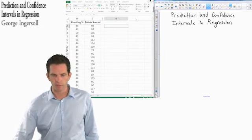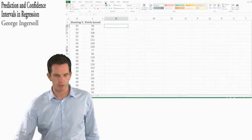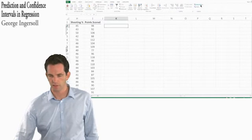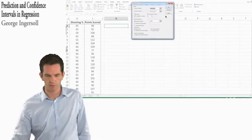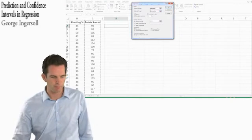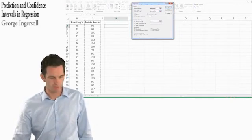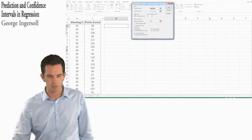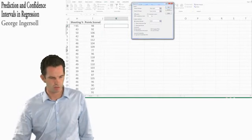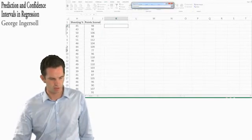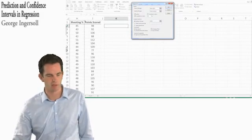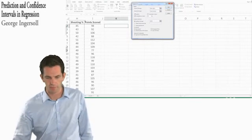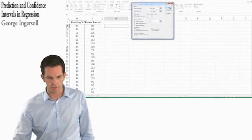I'm going to go ahead and run a regression using this data here, so I'll go to Excel, data, data analysis, select regression. My input range is here, this is my dependent variable points scored. My input range for shooting percentage is predicting points scored. I'm using labels because my first row here is devoted to labeling the data, and let's go ahead and run this thing.